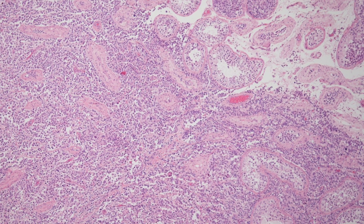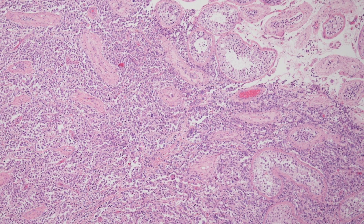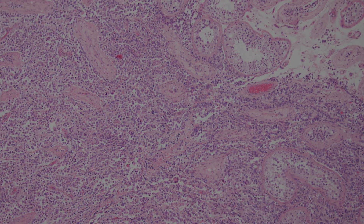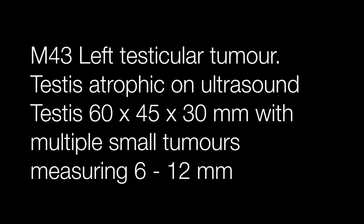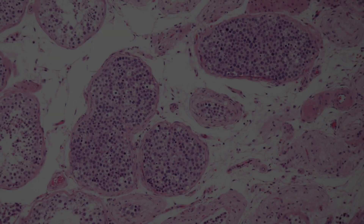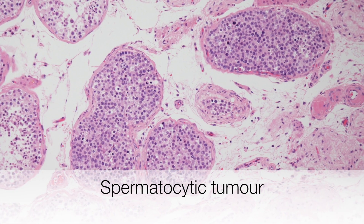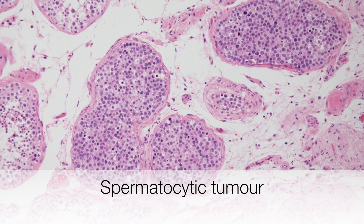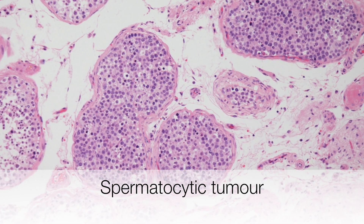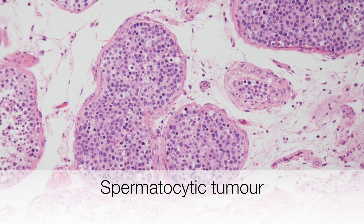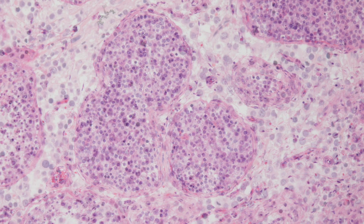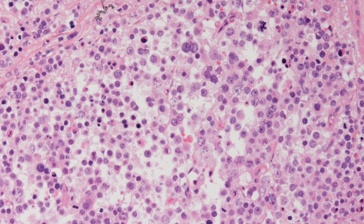Here is a quick preview of case number one. This was a male of 43 with a left testicular tumour, and on ultrasound there were multiple small tumours up to 12 millimetres across. This is a nice example of a spermatocytic tumour. The old term for spermatocytic tumour is spermatocytic seminoma.